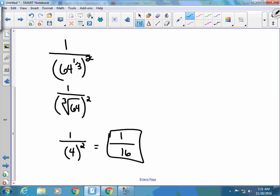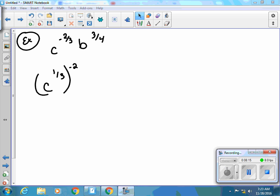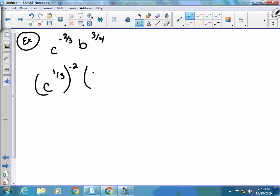We'll do another one of these. So let's say that I have c to the power of negative 2 thirds and b to the power of 3 fourths. I'm going to write this with radicals. I'm going to work on both of them at the same time. c is going to be to the 1 third to the power of negative 2. So now I'm going to split up that b. So I've got b to the 1 fourth to the power of 3.